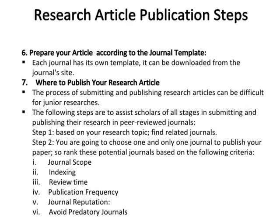Step seven is where to publish your research article. The process of submitting and publishing research articles can be difficult for junior researchers. The following steps assist scholars of all stages in submitting and publishing their research in peer-reviewed journals. Step one: based on your research topic, find related journals. Step two: choose one and only one journal to publish your paper, and rank potential journals based on specific criteria.